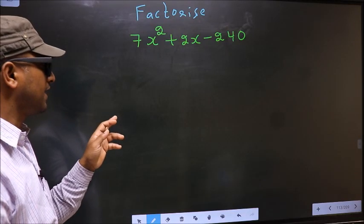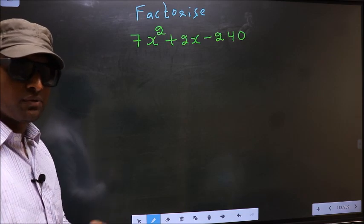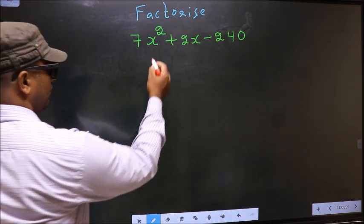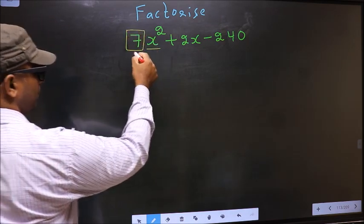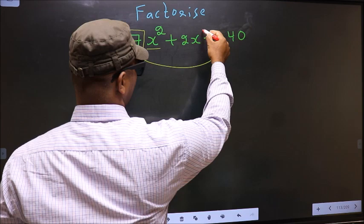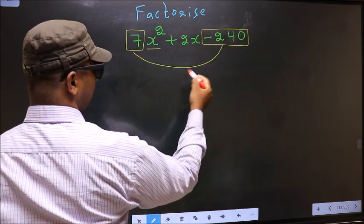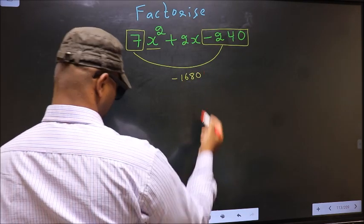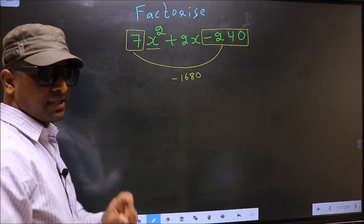Factorize 7x² + 2x - 240. To factorize, step 1: the coefficient of x², that is 7 here, should be multiplied to the constant -240. So 7 into -240, you get -1680. This is your step 1.